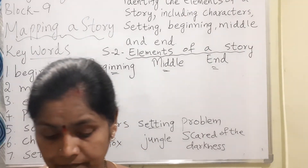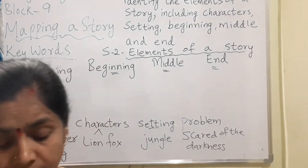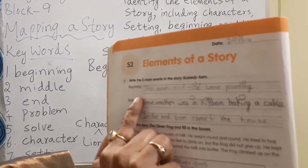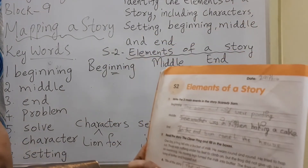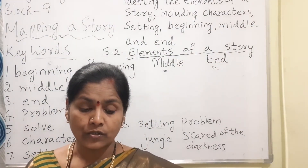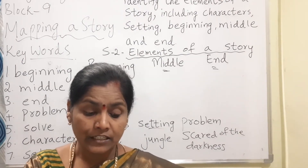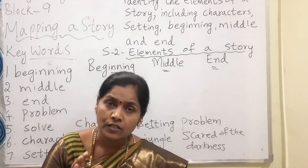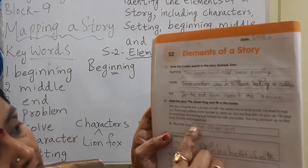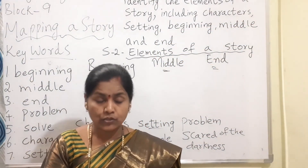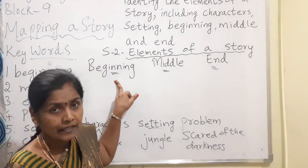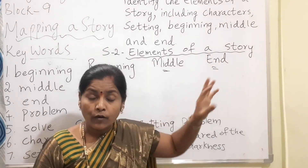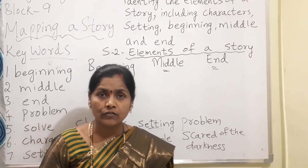Now, all of you open your English workbook, page number 6. The first question is: write the three main events in the Scaredy Sam story — what happened in the beginning, what happened in the middle, and what happened in the end. You have to write that down. The second question: they have given a story called 'The Clever Frog' — read the story and fill in the boxes. The title means the name of the story. After reading, write the beginning, middle, and end in the respective boxes. Thank you. Have a good day.